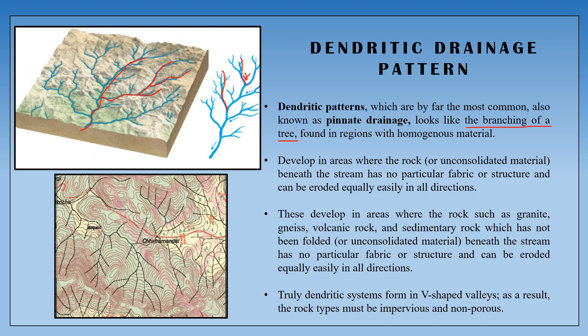We can see the characteristics of the Dendritic Drainage Pattern. When the tributary channel meets the main stream and joins, we can see a uniform density pattern. The second characteristic is that the slopes are in the same direction. This pattern is found in areas with granite, gneiss, volcanic rock, and sedimentary rock.